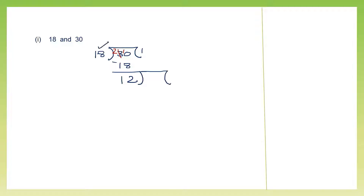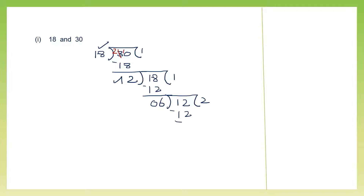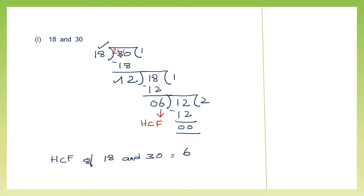We put 18 inside as our new dividend. 12 ones are 12 — we continue the division normally. 8 minus 2 is 6, and we have 0. Again we continue: 6 will be our divisor this time, and we use 12 as the dividend. 6 twos are 12, and now the remainder is 0. We keep doing this until we get remainder 0, and the last divisor used is the HCF. So the HCF of 18 and 30 is 6.